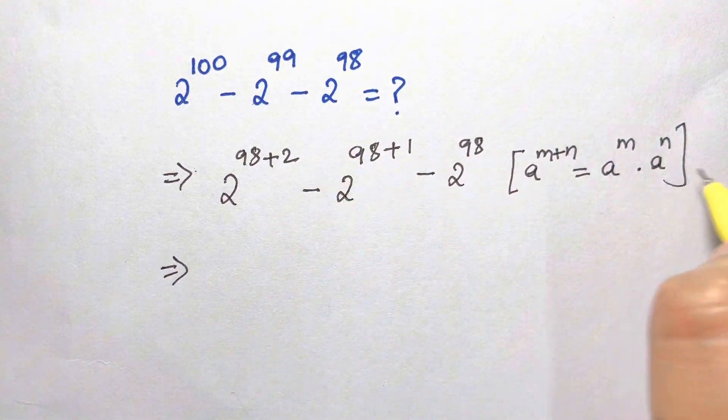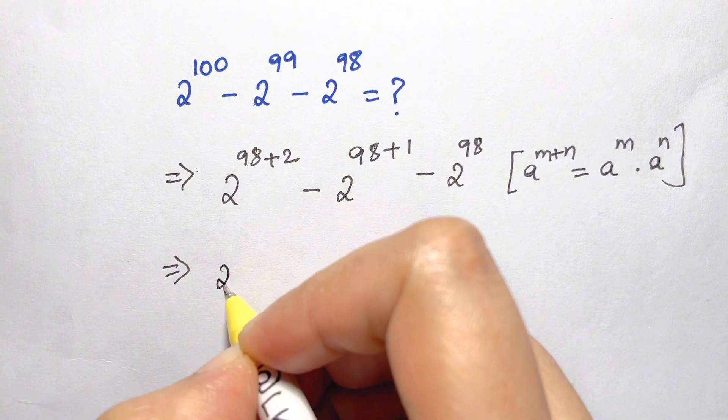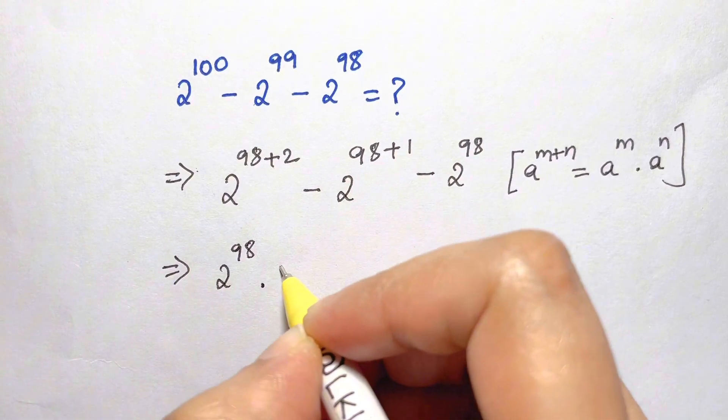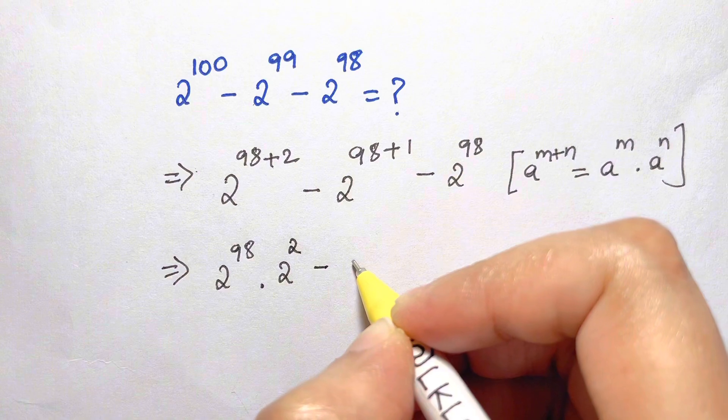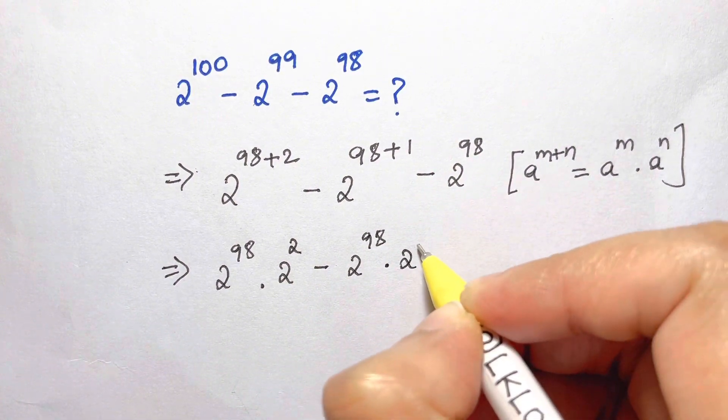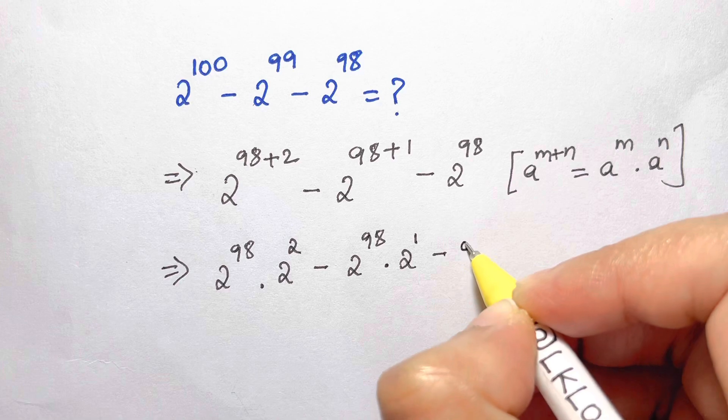So 2 to the power of 98 times 2 squared minus 2 to the power of 98 times 2 to the power of 1 minus 2 to the power of 98.